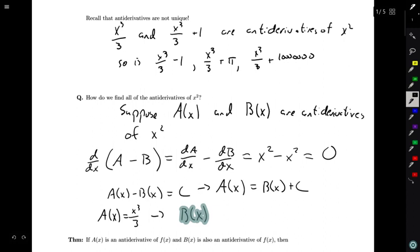Let's call B(x) x³/3. We can do that. B(x) is x³/3. This tells me that A(x) has to be equal to x³/3 plus some constant c. And this is what we're going to find in general. There's nothing special about x² here. You could replace x² by your favorite function in the world. And you would find that any two antiderivatives differ by a constant.